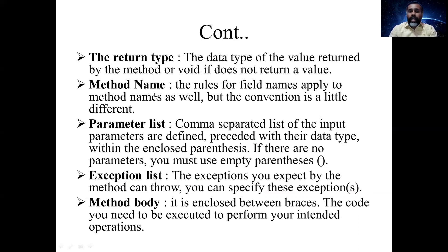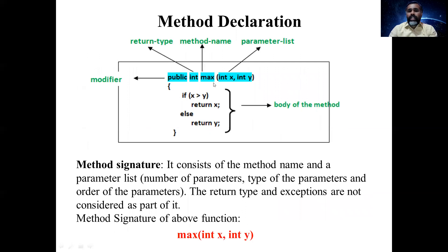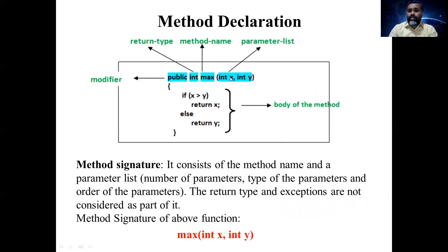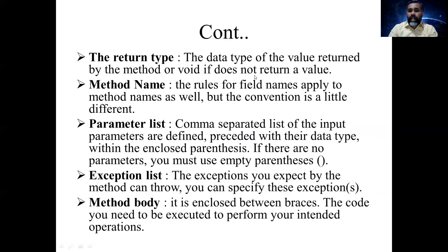The third component is the method name — a user-defined name given to your function or method. The rules for field names apply to method names as well, though the convention is a little different. The fourth component is the parameter list. Inside the function we have parameters; here I have two parameters, int x and int y. Parameters are separated by commas.